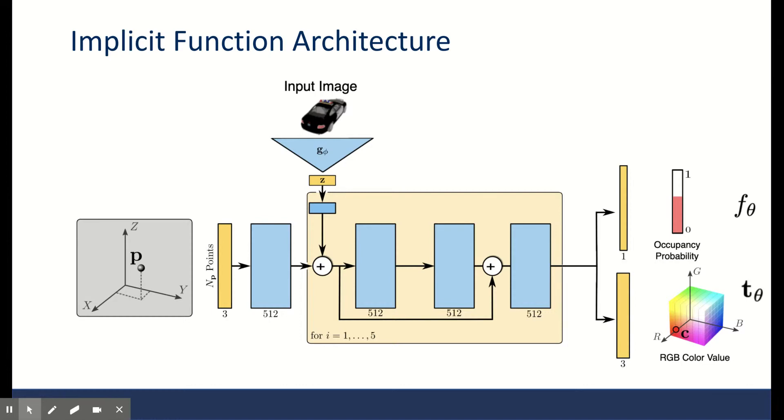They have five residual blocks. At the start of each block, the conditioning representation Z, which is based on the input image, is concatenated. The input is just a 3D vector of the point coordinates we are querying. The last head has four dimensions: one dimension for the occupancy probability F_theta, and three dimensions for the color at that point. So now the question is, with the surface function F_theta, how can we find the surface and render an image to have a full system?